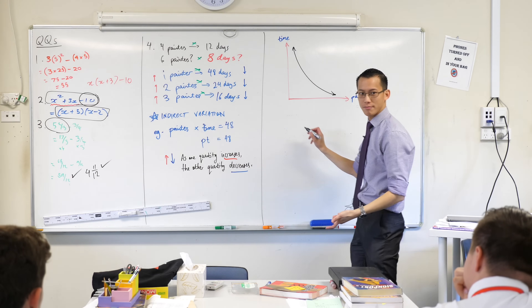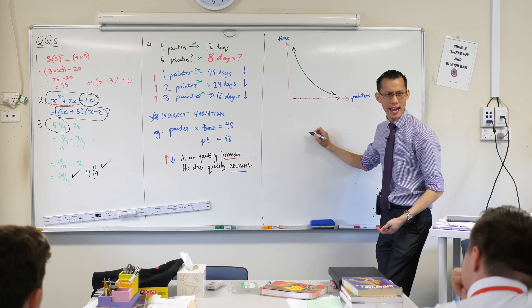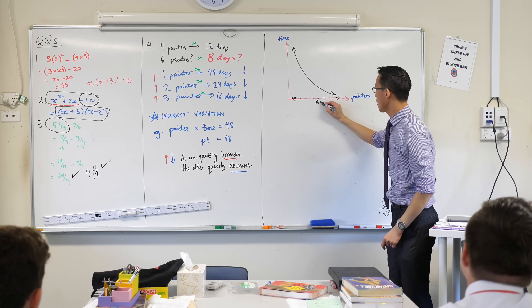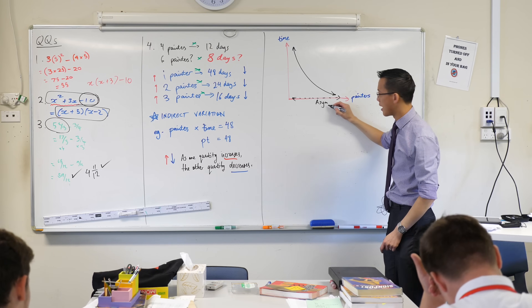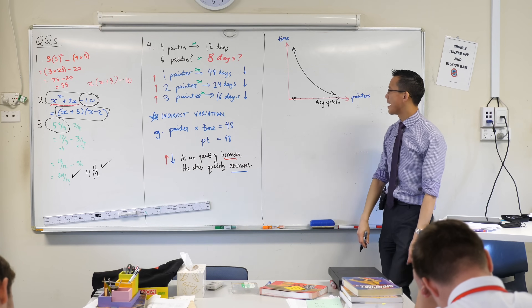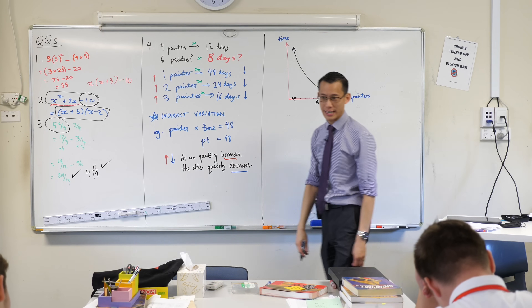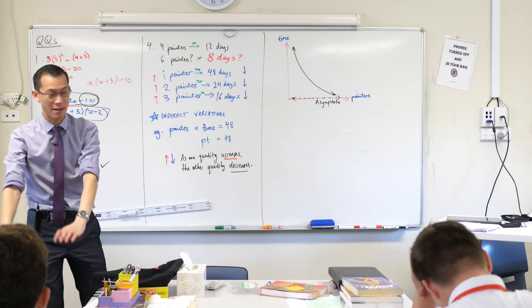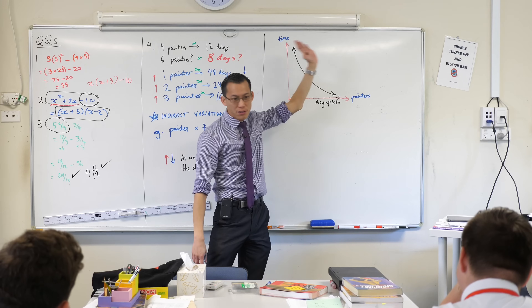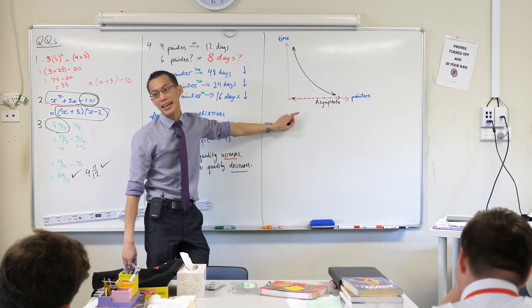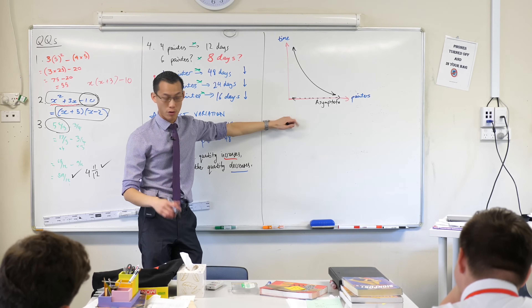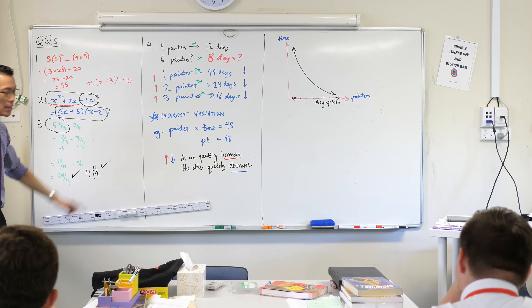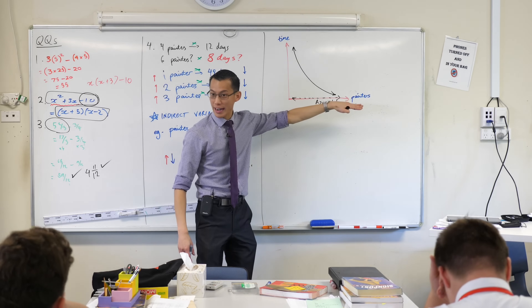Does anyone remember what we call it — that shape curving down toward zero? It starts with an A. It's an asymptote. So label this with me — it's a weird word, hard to spell: A-S-Y-M-P-T-O-T-E. There's an asymptote there. No matter how many painters you throw at this — painters can go to millions and millions — but you'll never get to time equals zero. They're still going to take a second or two.